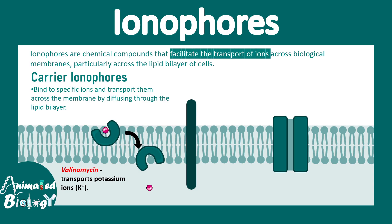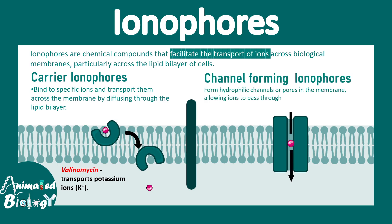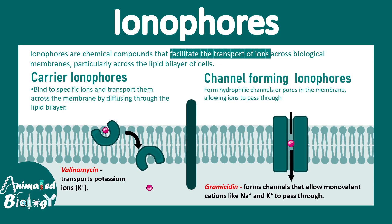There are also channel-forming ionophores, which are compounds that act like ion channels and allow ions to pass through. They provide a hydrophilic core and prevent the ion from being exposed to the hydrophobic environment in the membrane. One example is gramicidin, which forms a channel suitable for monovalent cations like sodium or potassium to pass through.